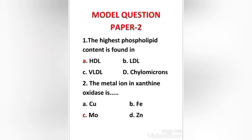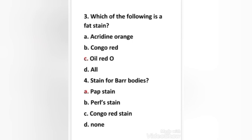Next question: the metal ion in xanthine oxidase is — copper, iron, molybdenum, or zinc? The right answer is option C, molybdenum. The metal ion in xanthine oxidase is molybdenum.